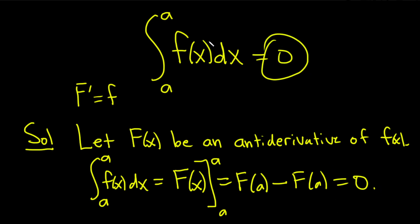Whenever you have a definite integral where the lower limit of integration is the same as the upper limit, in other words the limits are the same, you always get zero.